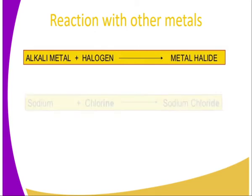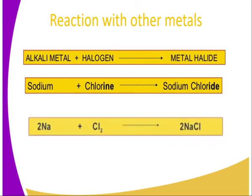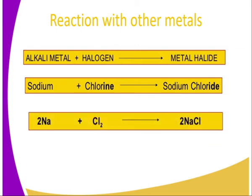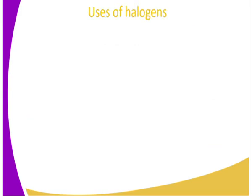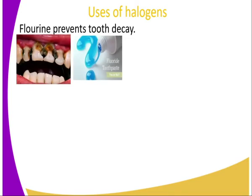For alkali metals reacting with halogens: an alkali metal reacts with a halogen to form a metal halide. For example, sodium plus chlorine gives us sodium chloride, and so on for other halogens.